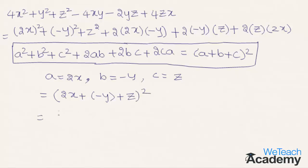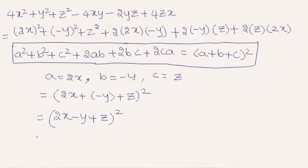So we get this as (2x − y + z)², and the square root of the expression is 2x − y + z. This was the basic introduction on how to find the square root of an algebraic expression under the inspection method. Hope you understood the concept. Do like and subscribe to vteachacademy.com. Thanks for watching, have a nice day.